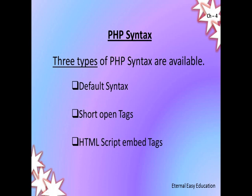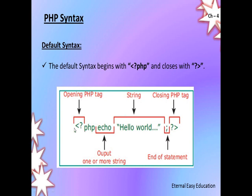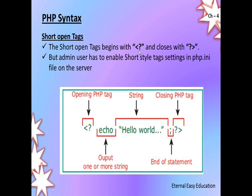Now we'll look at PHP syntax. There are three types of PHP syntax — that is, three ways to write a PHP program. One is the default syntax: it starts with the less-than symbol followed by a question mark and the word PHP, and ends with a question mark followed by greater-than. These are the opening tag and closing tag. The second is the short open tag: less-than question mark at the start, question mark greater-than at the end, but without the word PHP in the starting tag. For this, the php.ini configuration file should be enabled on the server side.